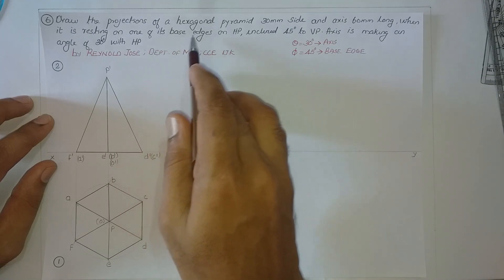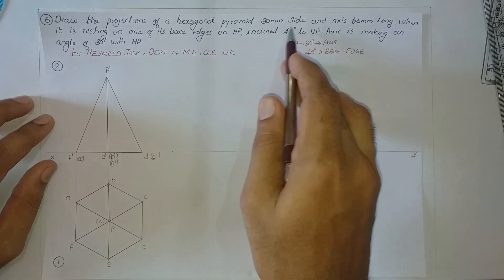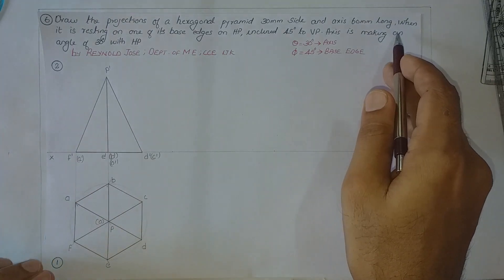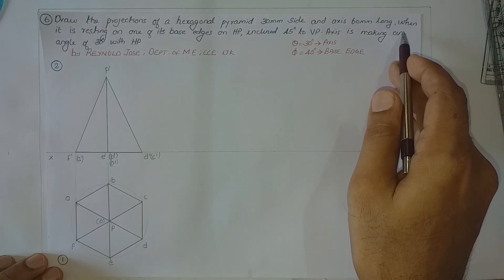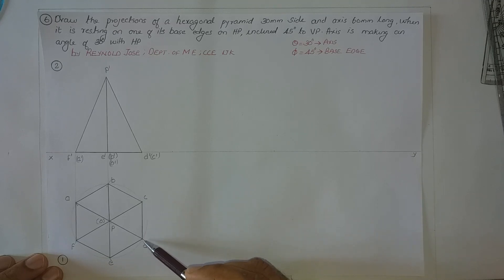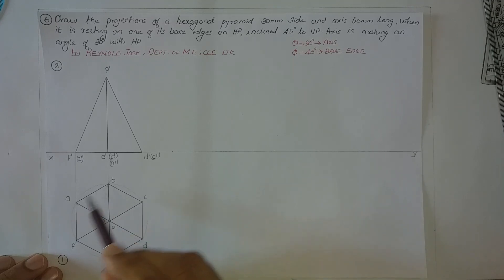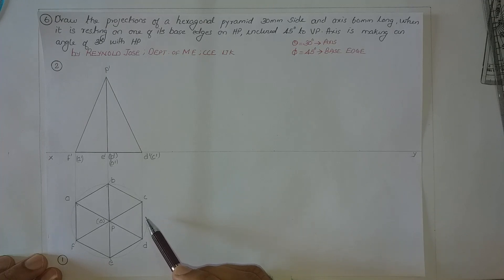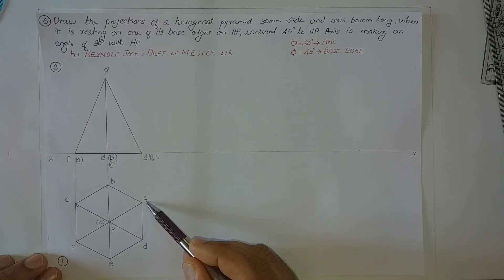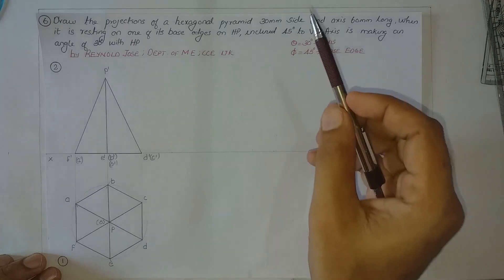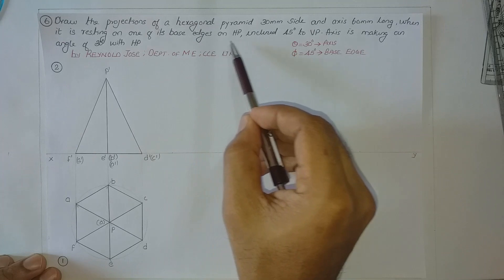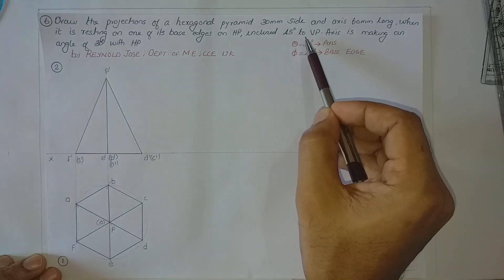We have a hexagonal pyramid 30mm side and axis 60mm long. It is resting on one of its base edges. That is why one of the base edges has been placed on the right-hand side in the base shape. When tilting the solid finally, it will be resting on the base edge CD.